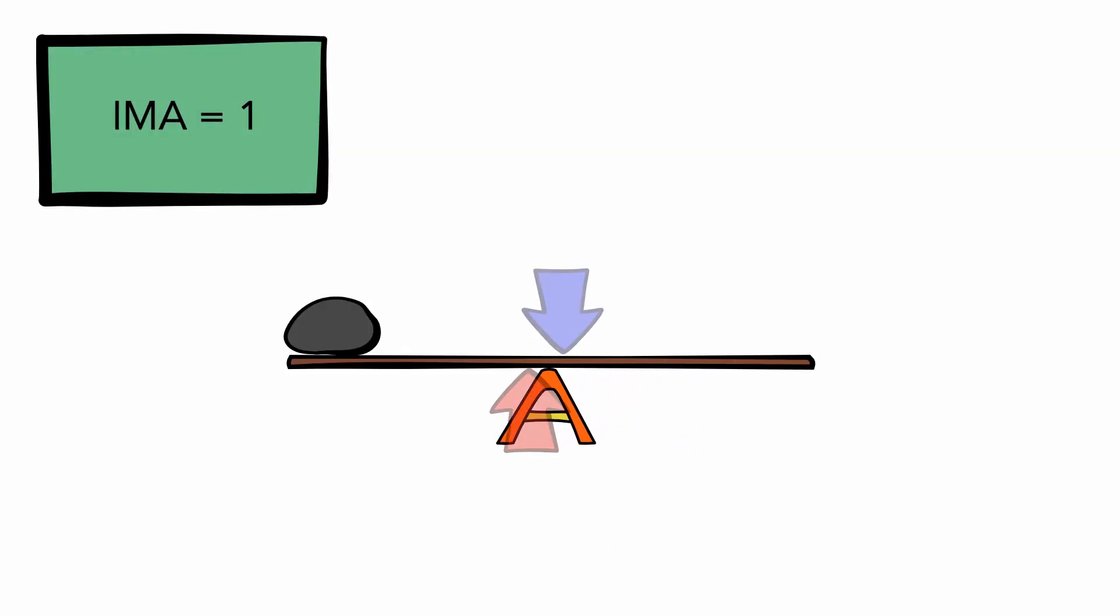When mechanical advantage is equal to 1, we don't get the benefits or trade-off of a greater force, or a range of motion. Instead, it allows us to change the direction of the applied force.